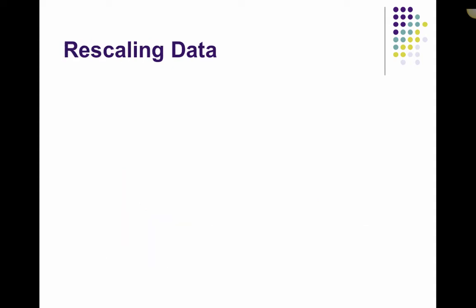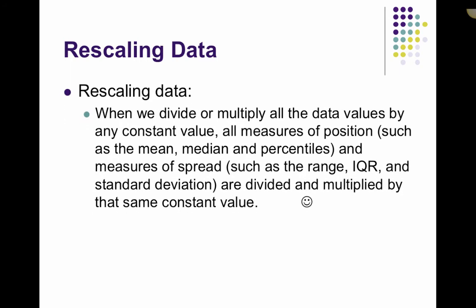The other way we can alter data is by rescaling it. Where shifting requires adding or subtracting, rescaling is when we're dividing or multiplying. When you divide or multiply all data values by a constant, everything changes. All measures of position — the mean, median, percentiles, minimum, maximum — will change by that multiplier. The measures of spread will also change by that same constant. So if you multiply every data value by two, you multiply everything by two: the mean by two, the standard deviation by two, everything gets multiplied.